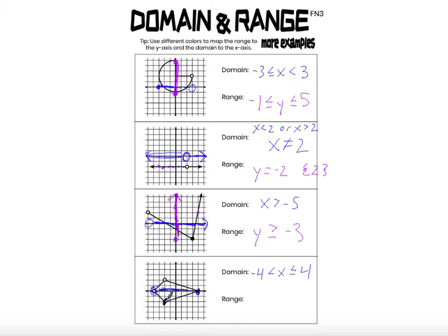Looking at the range as I've changed it — with a closed dot at the lower bound and an open dot at the upper bound — I want to start from the bottom. The smallest possible y value is negative 2, and it is in the range because this point has a y-coordinate of negative 2. Y can be anything bigger than negative 2 all the way up to y equals 2, not including 2. So the range is negative 2 ≤ y < 2.